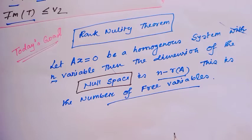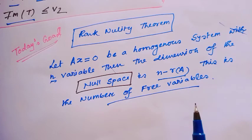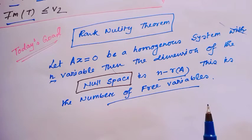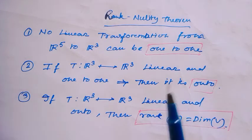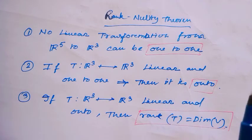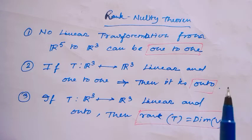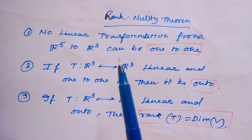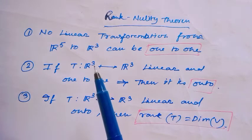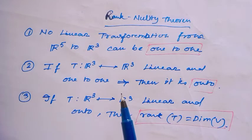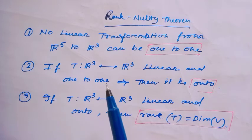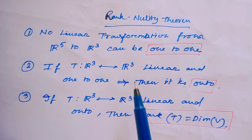By this theorem we can easily find when a linear transformation is one-to-one or onto. By this rank-nullity theorem I will get to find some nice results. For example, I will show there is no linear transformation from R5 to R3 which can be one-to-one. Also, if T is a linear transformation from R3 to R3.